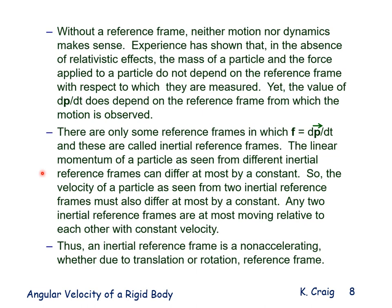The linear momentum of a particle as seen from different inertial reference frames can differ at most by a constant, so the velocity of a particle as seen from two inertial reference frames must also differ at most by a constant. Any two inertial reference frames are at most moving relative to each other with a constant velocity. Thus, an inertial reference frame is a non-accelerating reference frame, whether due to translation or rotation.